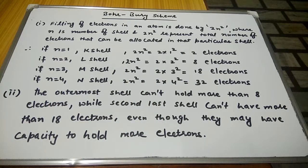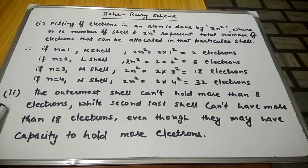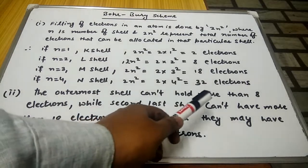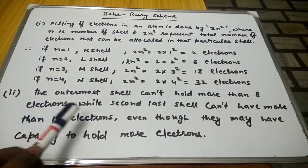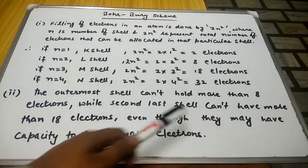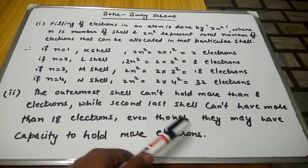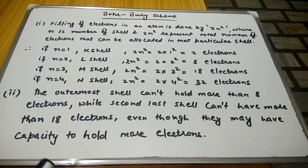In this manner we can allocate the number of electrons to their respective orbitals. The second point is: the outermost shell cannot hold more than 8 electrons, while the second last shell cannot have more than 18 electrons, even though they may have the capacity to hold more electrons. This was Bohr-Bury's scheme.